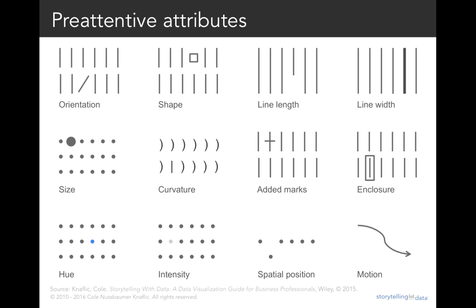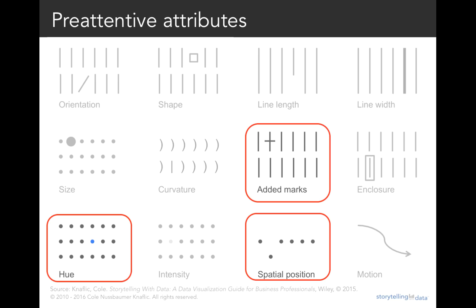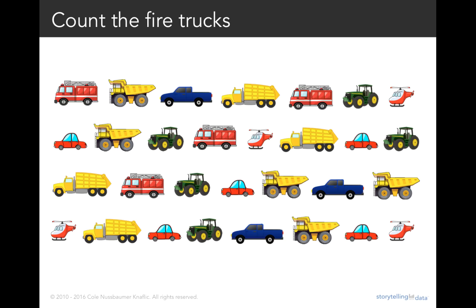Notice as you scan across the different groups how the one element that's different just catches your eye — you don't really have to think about looking for it. We're going to focus on three of these pre-attentive attributes in particular today: spatial position, hue or color, and added marks. Let's look back at the fire truck example and show what we can do with position, color, and added marks to change how you process this information.